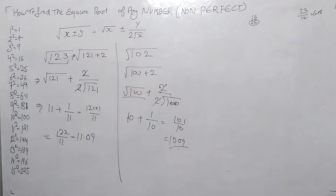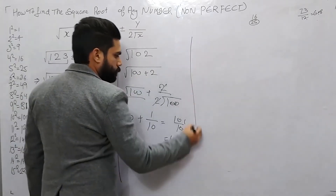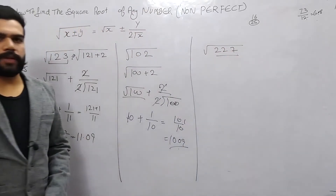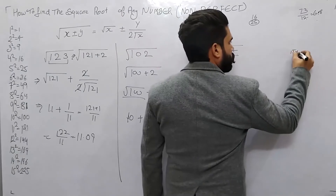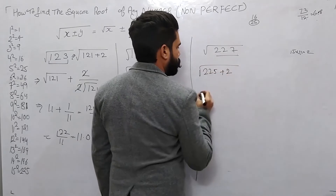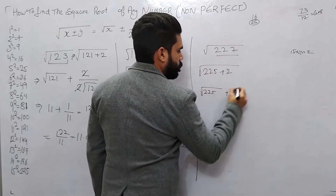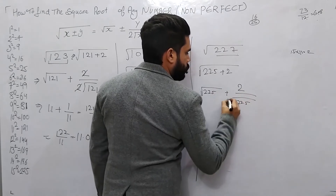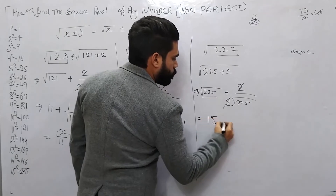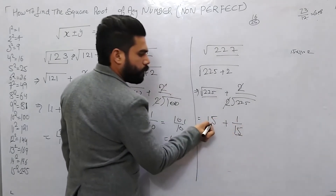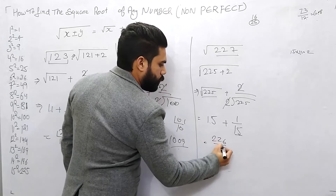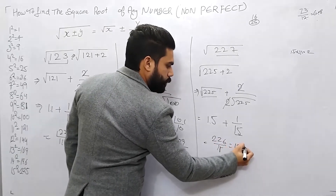Next example: √227. The closest perfect square is 225, so we write 225 plus 2. Applying the formula: root 225 plus 2 over 2 root 225. Root 225 is 15, so 2 times 15 is 30. We get 226 over 15 — that gives 15.06. That is the answer.